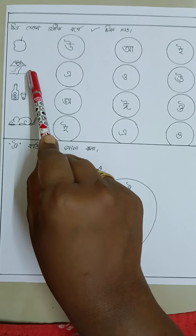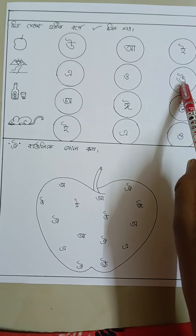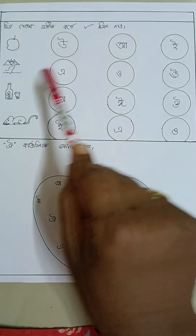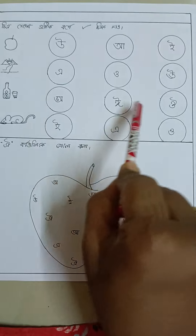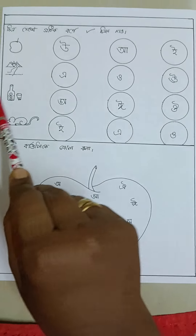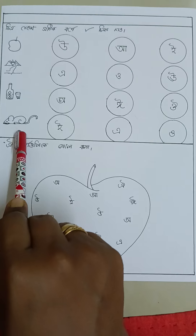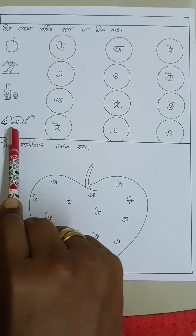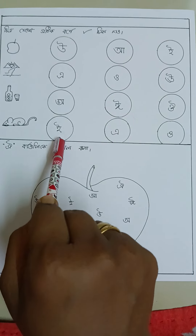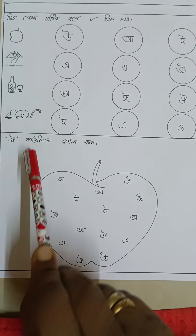Here I have drawn usha — that is the morning time. Usha starts with the letter dirghou, and that is the answer. Next, the answer will be 'ow' because 'ow' is the starting letter of owushad. Next is rat, which means idur in Bengali, and hoshui is the answer — the child will tick this letter.